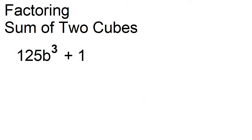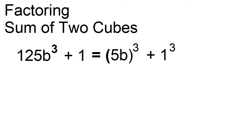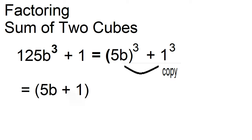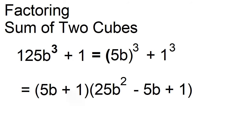Factor 125b cubed plus 1. This can be written as the cube of the quantity 5b plus the cube of 1. The factors are 5b plus 1 and 25b squared minus 5b plus 1.